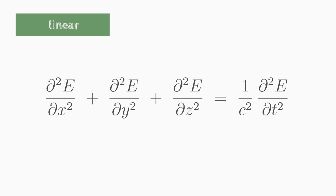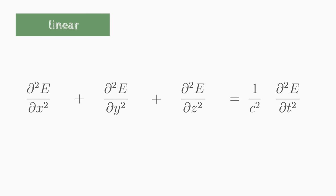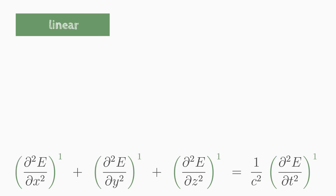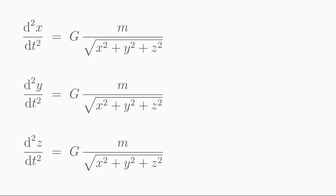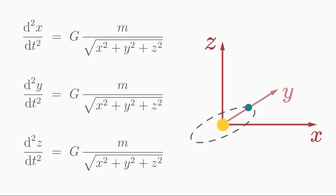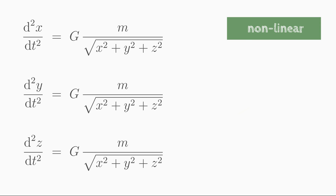The radioactive decay law is also linear. The wave equation is also linear. The coupled differential equation system for the motion of a mass in a gravitational field, on the other hand, is nonlinear — the searched functions x, y, and z occur in quadratic form, and there is also a square root and a fraction which make the system nonlinear.